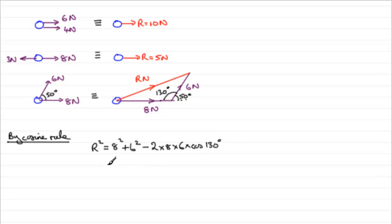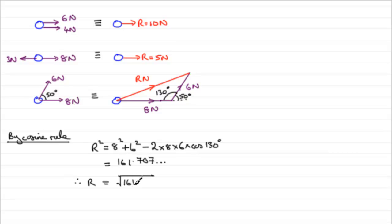If you work this out on your calculator, you'll find that you get 161.707 and so on. That's R squared, so to get R we take the square root of 161.707, which gives 12.71 and so on. Rounded to three significant figures, that's 12.7 newtons to 3SF.